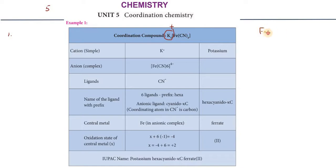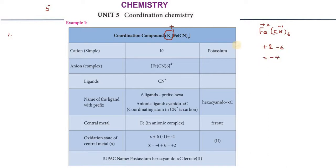Now, Fe is the central metal. Fe has an oxidation state of plus 2. CN has an oxidation state of minus 1. So 6 × (minus 1) gives minus 6. Plus 2 plus minus 6 equals minus 4. So the complex anion has a charge of minus 4.